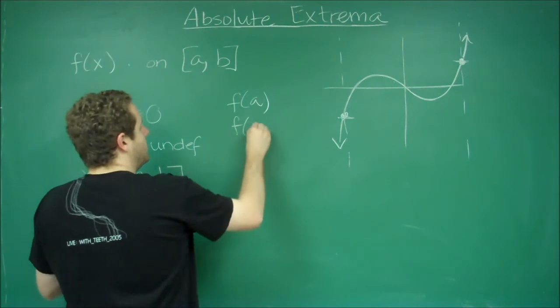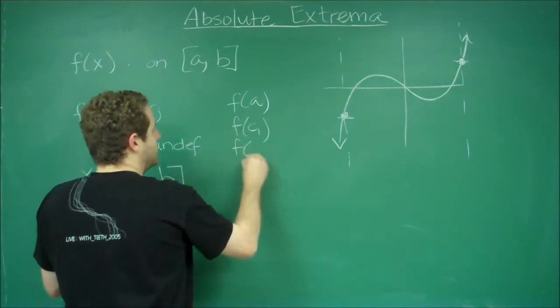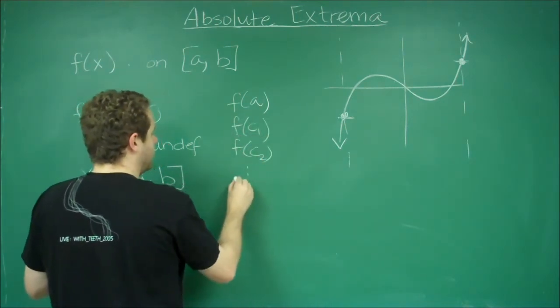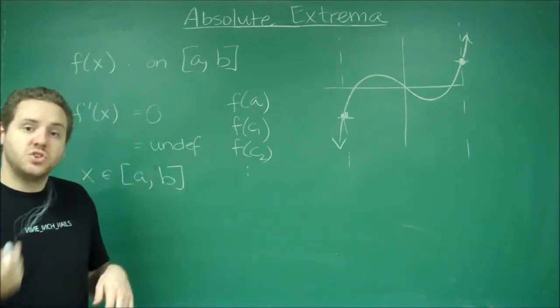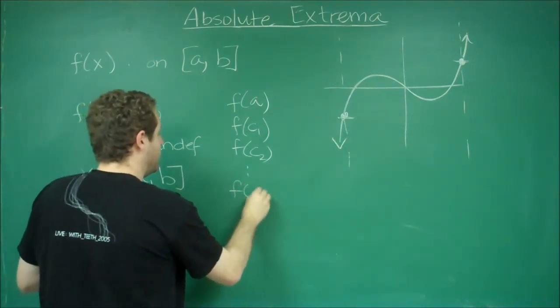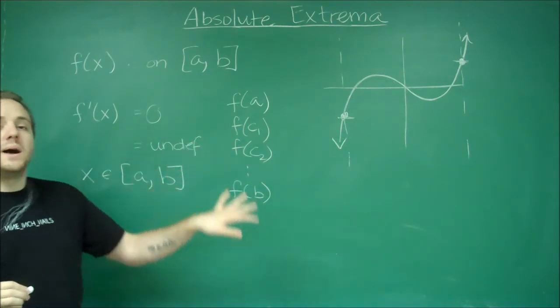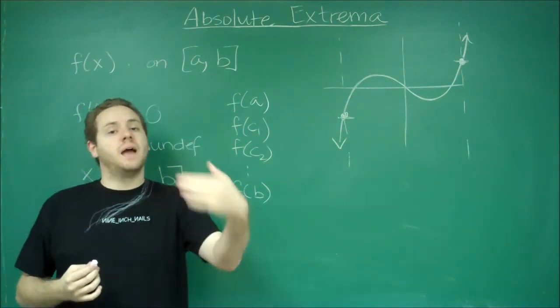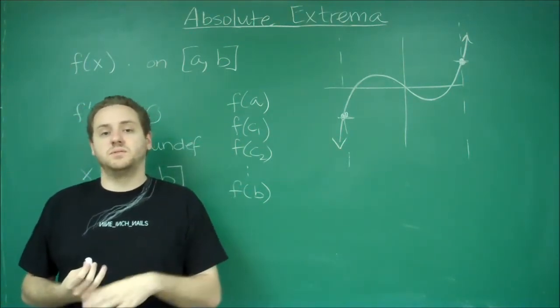We do all the critical numbers, f of c1, f of c2, however many critical numbers you have. And we have to try the last endpoint, f of b. So those are all of our possible candidates for something being the absolute max or the absolute min.